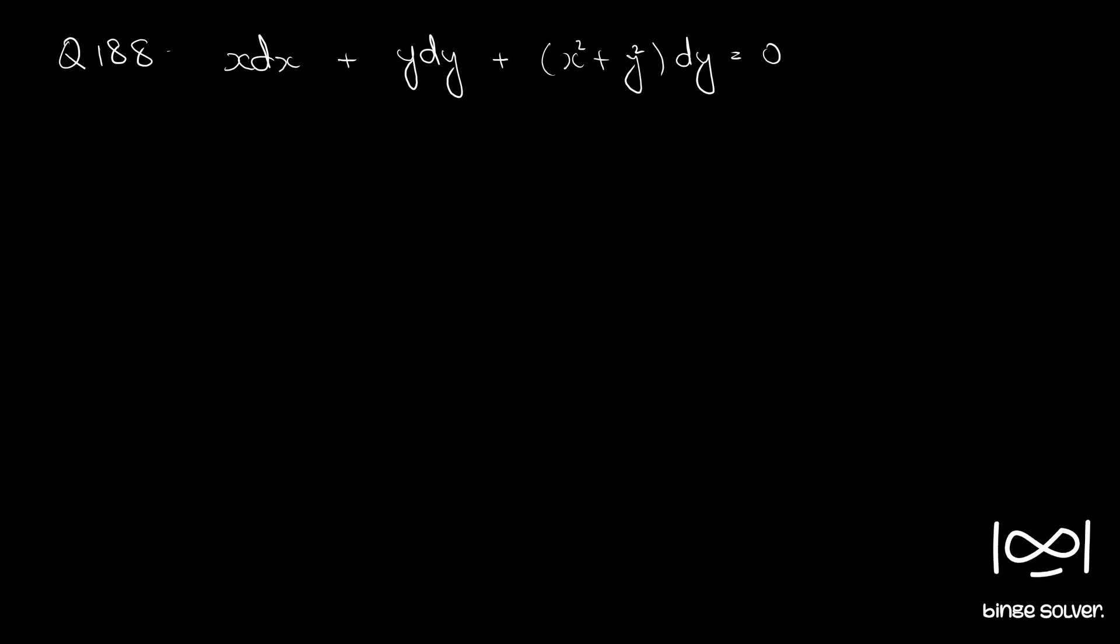We will first check whether the given equation is exact. So, if you rearrange this form into m dx plus n dy equal to 0, we get our m as x and n as x square plus y square plus y.